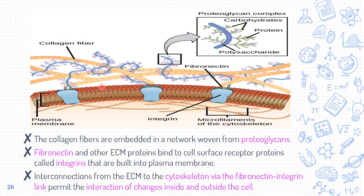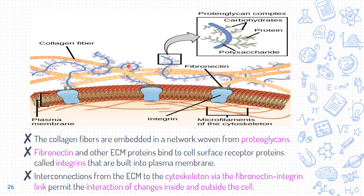In the extracellular matrix, collagen fibers are embedded in a network woven from proteoglycans. Fibronectin and other extracellular matrix proteins bind to cell surface receptor proteins called integrins, which are built into the plasma membrane. The interconnection from the extracellular matrix to the cytoskeleton inside the cell is formed via the fibronectin-integrin link, which permits interactions and changes both inside and outside the cells.